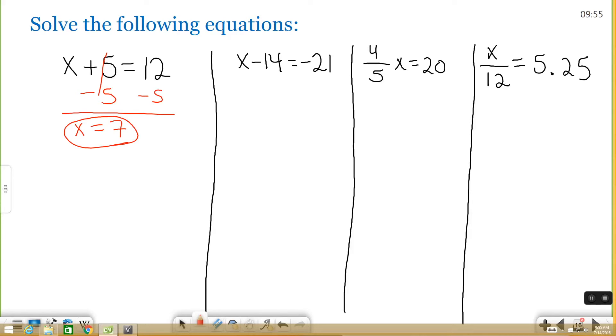x minus 14 equals negative 21. So the opposite of minus 14 is plus 14, plus 14. So 14s cancel. x equals negative 21 plus 14 is going to be negative 7.